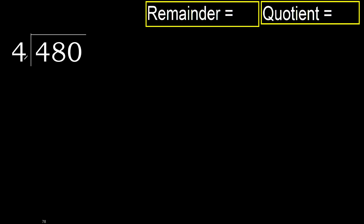480 divided by 4. 4 is not less, therefore work with 4. 4 multiplied by which number is nearest to 4, but not greater?